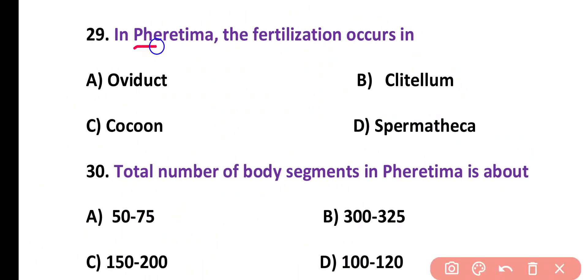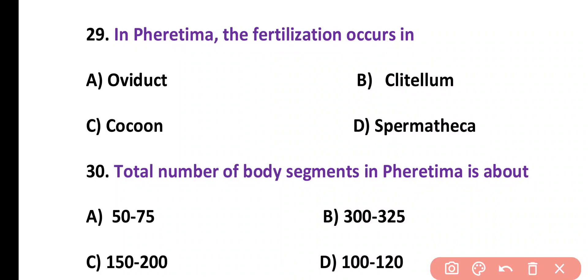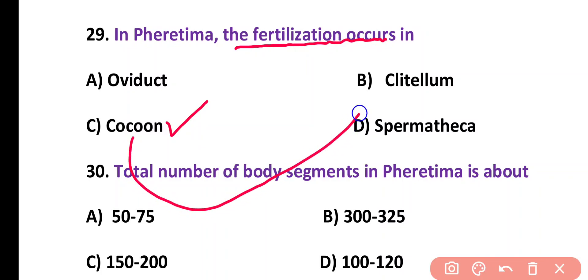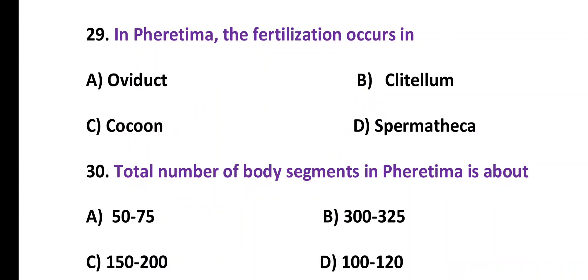Question number 29. In Pheretima, fertilization occurs in: oviduct, clitellum, cocoon, or spermatheca. Correct answer is option C. Pheretima fertilization occurs in the cocoon, which is produced through the clitellum.